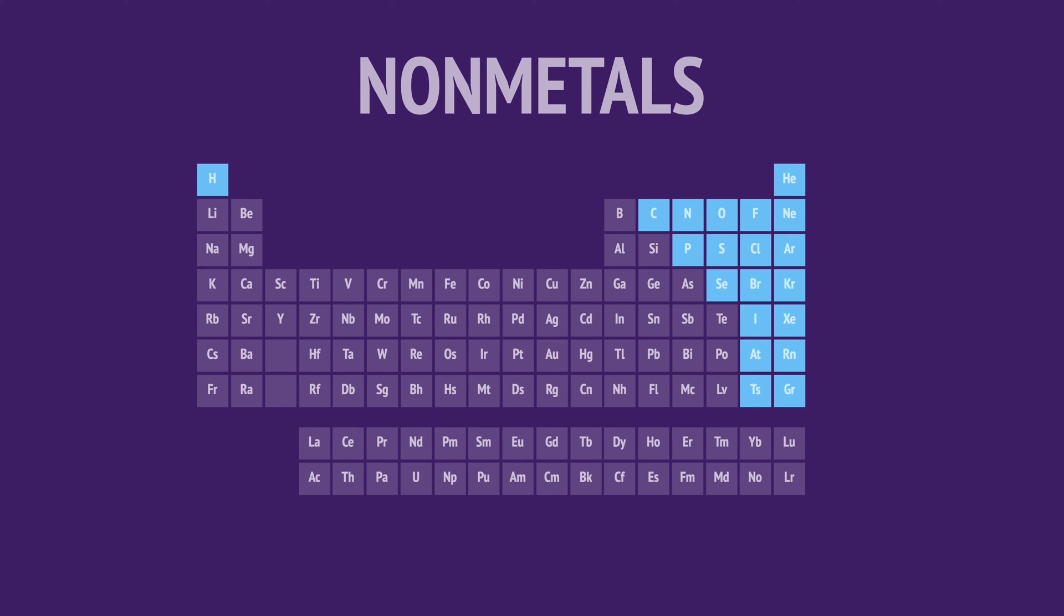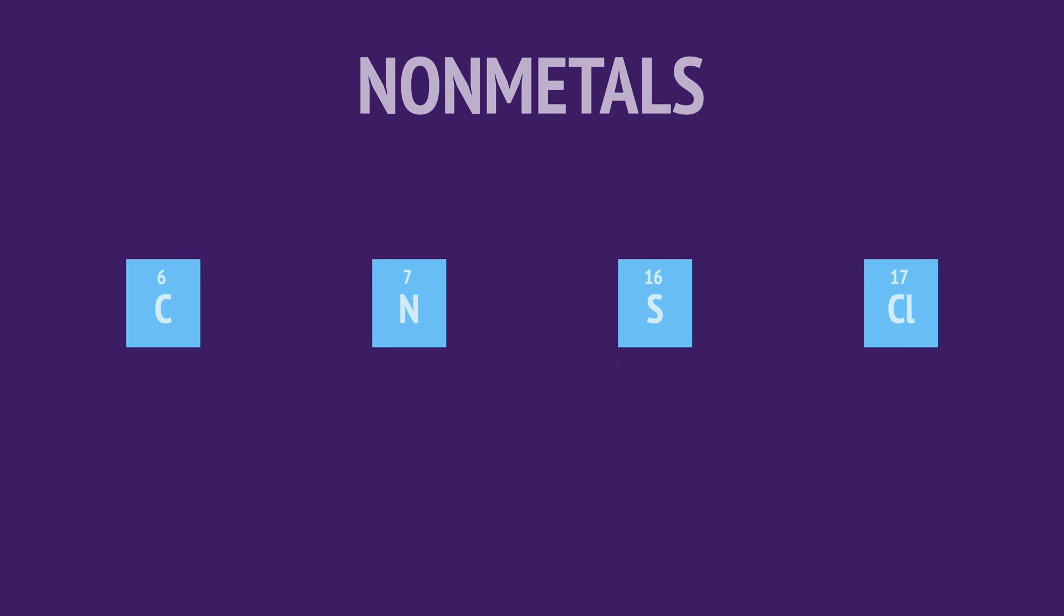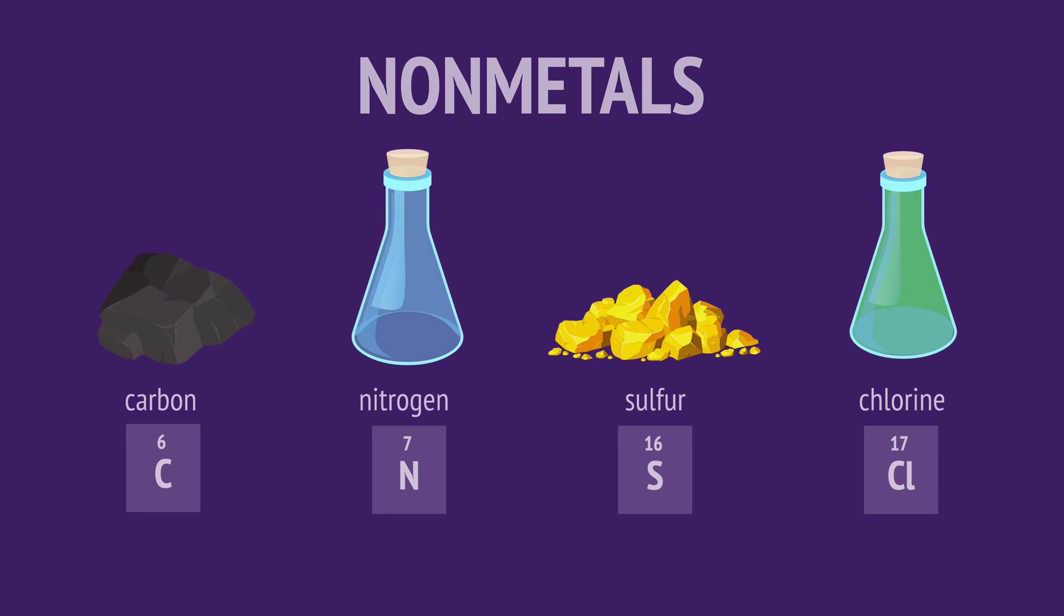Nonmetals, with the exception of hydrogen, are on the right of the periodic table. Nonmetals are defined by their lack of metallic properties and exist in a variety of forms.